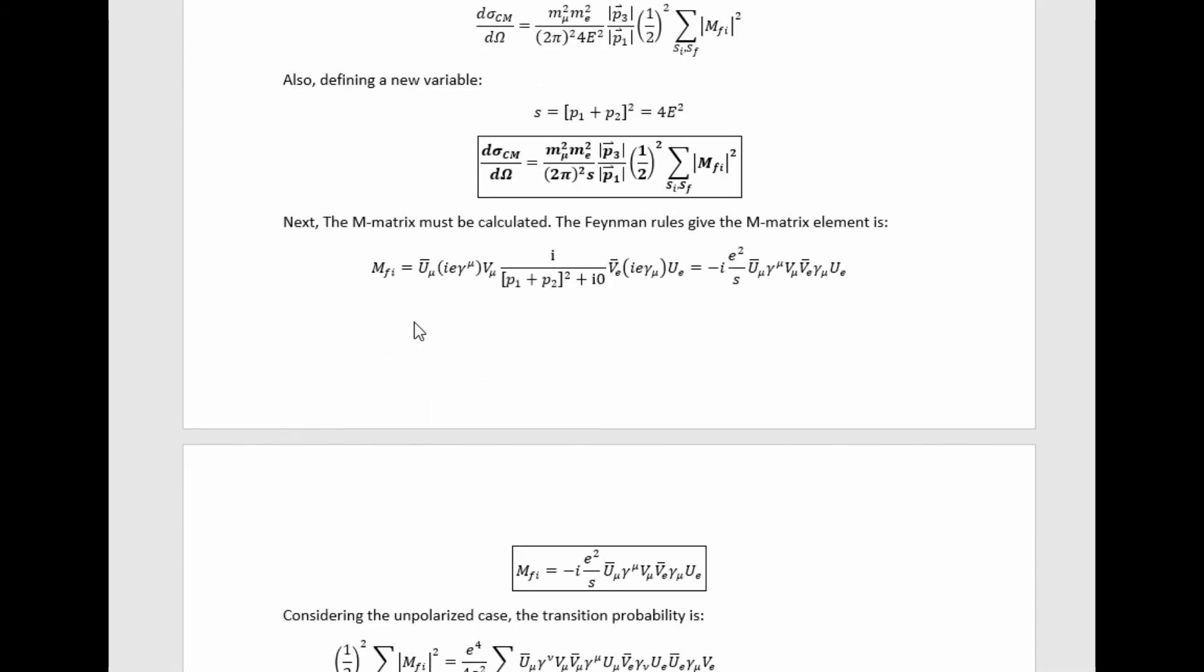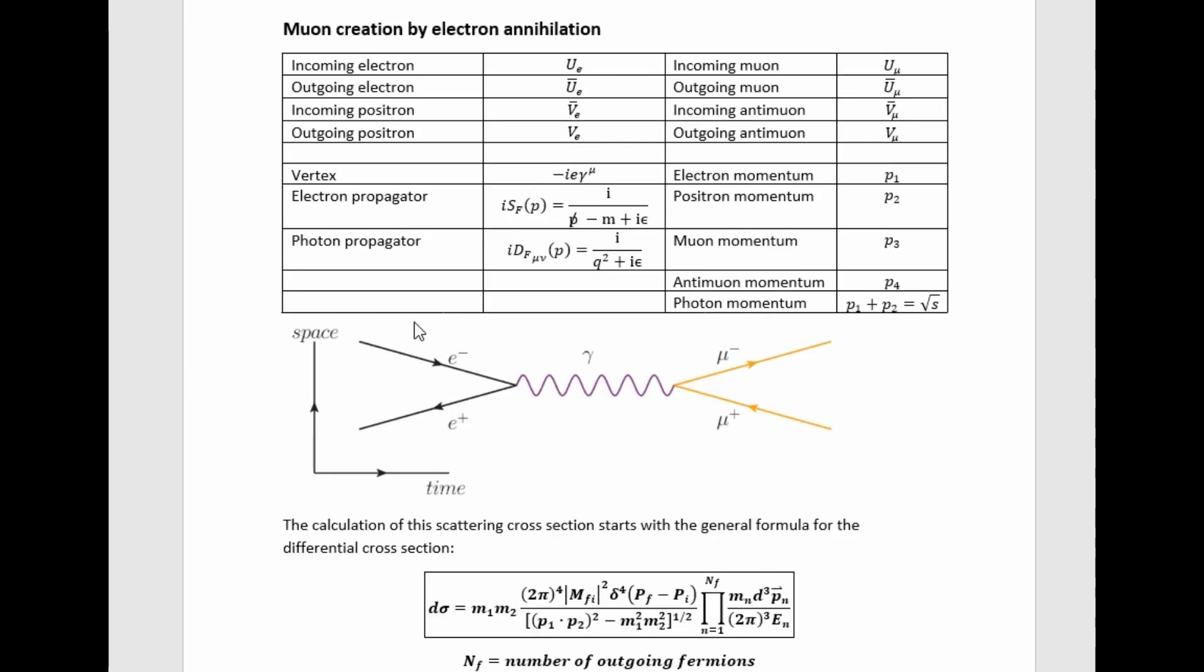So now it's time to use the Feynman rules given above to write out the actual Feynman amplitude for the Feynman diagram also given at the beginning. Going back up,